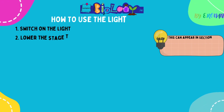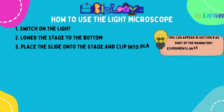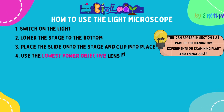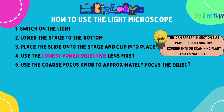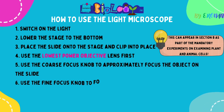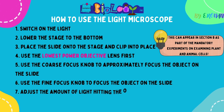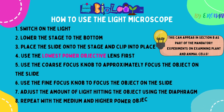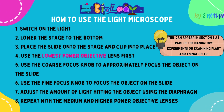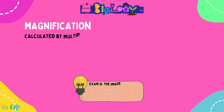How to use your light microscope: switch on the light, lower the stage to the bottom, place the slide onto the stage and secure it in place with clips. Start using the lowest power objective lens. Use the coarse focus followed by the fine focus to precisely focus your image. Adjust the amount of light using your diaphragm. Then repeat with the medium and high power lenses, and always draw what you see. This can appear in the section B experiment section.